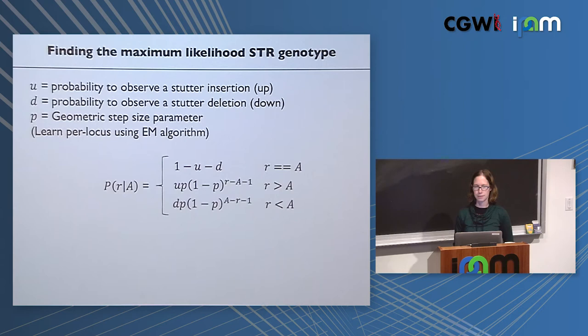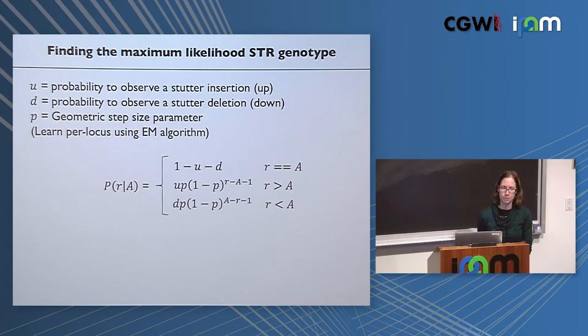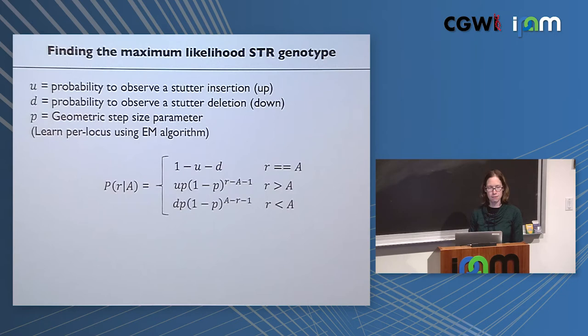The residual stutter in PCR-free data likely comes from bridge amplification during Illumina sequencing. HIPster also uses nearby SNPs, mostly to get phase information, which also makes estimating noise easier because you know which allele each read came from rather than dealing with a mixture of two alleles.